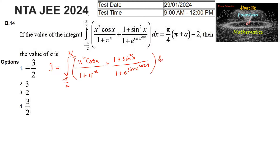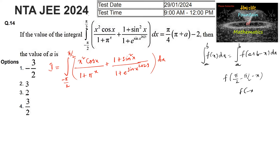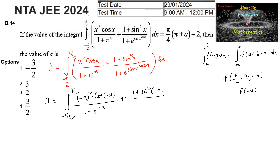Let us apply the property: ∫_a^b f(x)dx = ∫_a^b f(a + b − x)dx. Here, with limits −π/2 to +π/2, we will be getting f(π/2 + (−π/2) − x), that is f(−x). So let us substitute and write I = ∫_{−π/2}^{+π/2} of (−x)² · cos(−x) / (1 + π^(−x)) + [(1 + sin²(−x))^2023] dx.